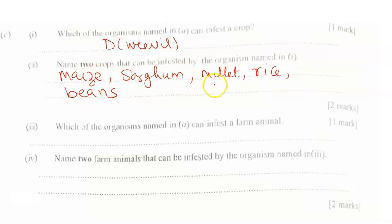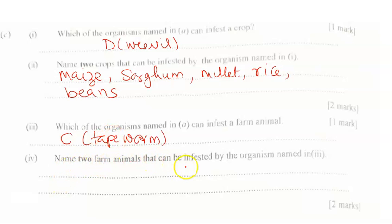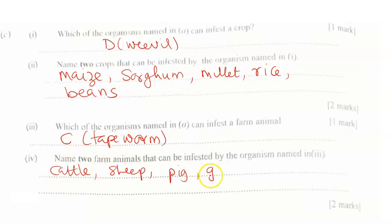Which of the organisms named in A can infest a farm animal? That would be organism C, which is tapeworm. Name two farm animals that can be infested by the organism named in III. There are many — cattle, sheep, goats, and poultry. These are animals that can be infested by tapeworm. Pick any two for the required two marks.